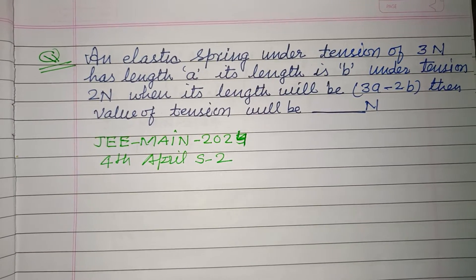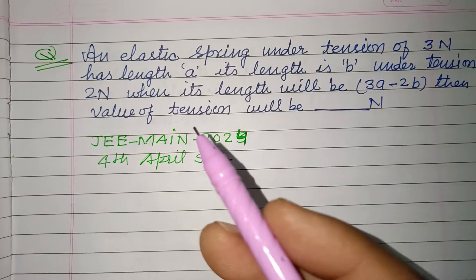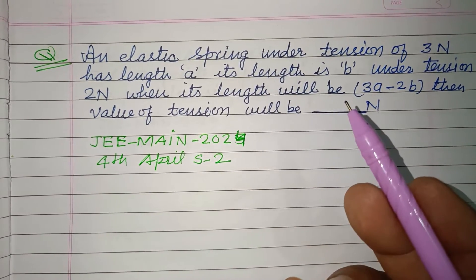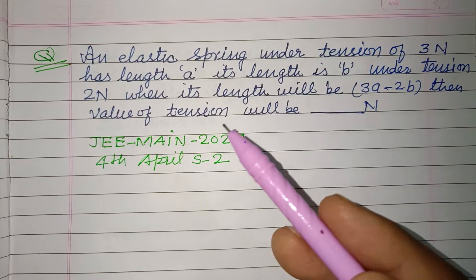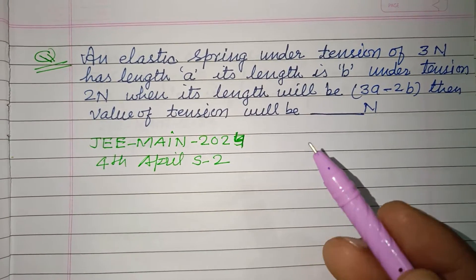Hello students, warm welcome to this YouTube channel. An elastic spring under tension of 3 Newtons has length 'a'. Its length is 'b' under tension of 2 Newtons, and its length will be (3a - 2b). Then what is the value of tension?